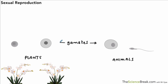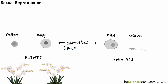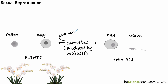Gametes are the sex cells. In plants the sex cells are pollen grains and egg cells, and in animals they are egg cells and sperm cells. These are produced by meiosis. Because meiosis produces gametes, each of the gametes is genetically non-identical.